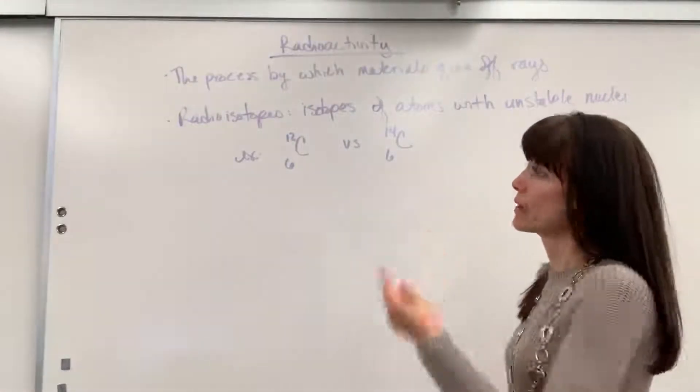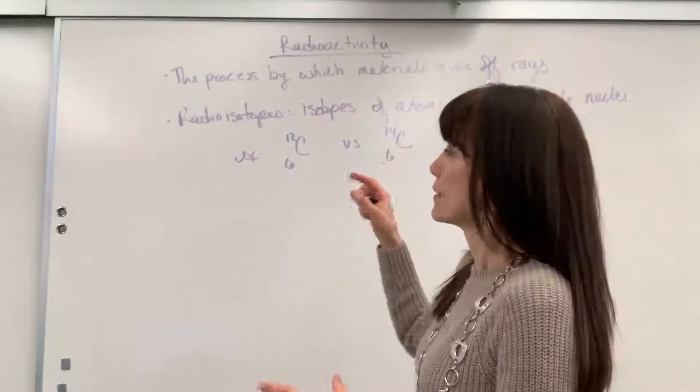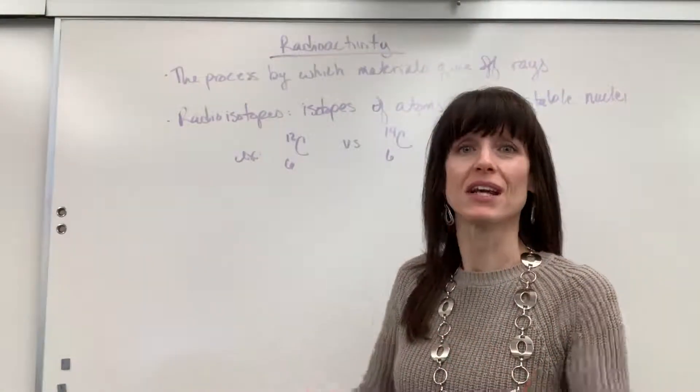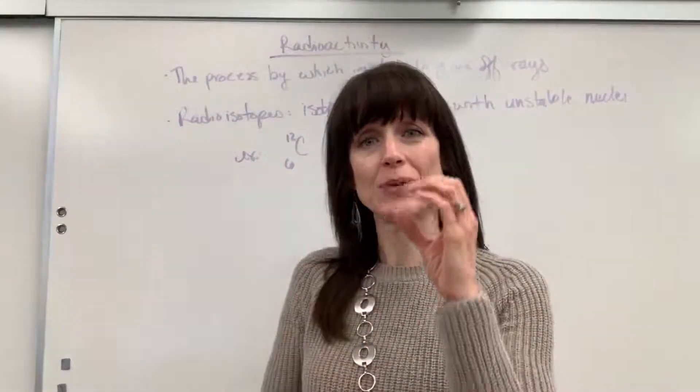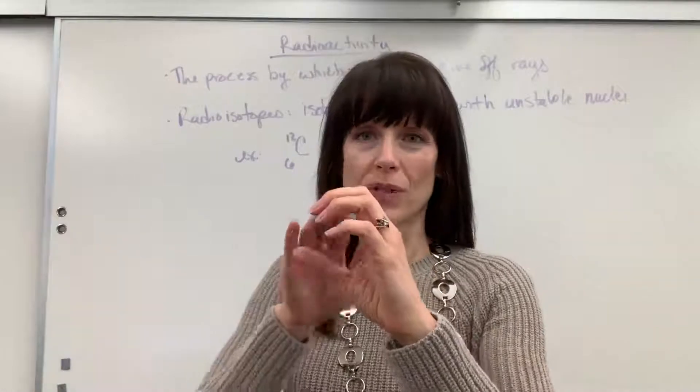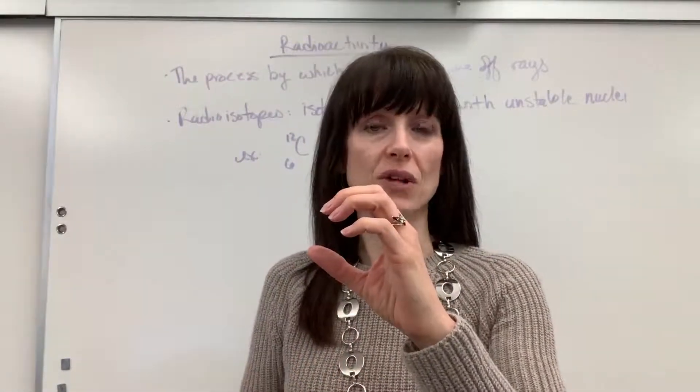Madame Curie was the one who first discovered this, this and her husband. We have different types of radiation, and you can watch the video on that, but it's going to be an unstable nucleus. So remember in the nucleus, we have the protons and the neutrons. Outside the nucleus and the energy levels, we have the electrons.